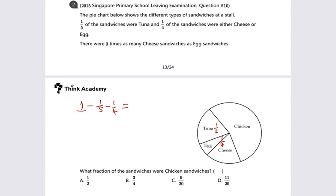So we have to turn everything to the base of 20. 1 is equal to 20 over 20, take away 1 over 5 is the same as 4 over 20, also a quarter is the same as 5 over 20. To work this out, we should get 11 over 20.